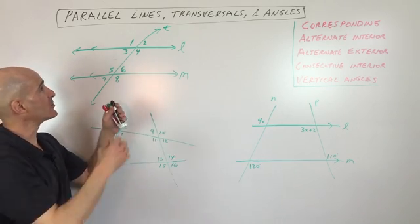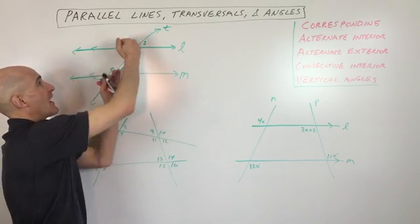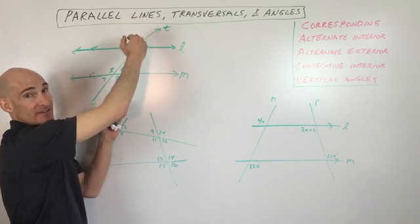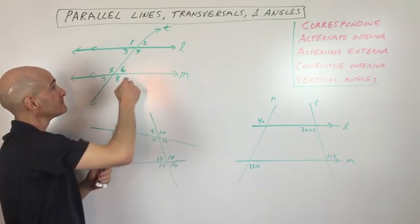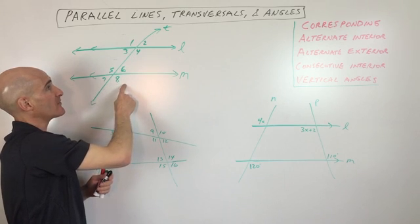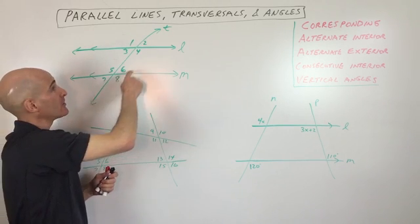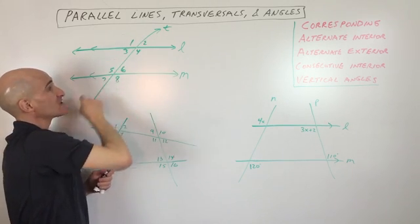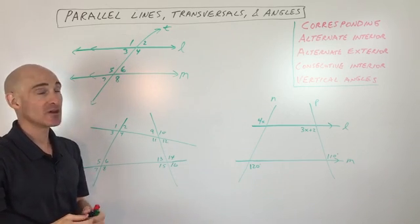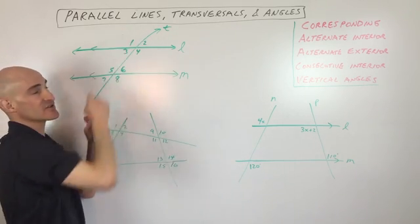Alternate exterior angles: exterior means these are on the outside — they're not in between the parallel lines, they're on the exterior. Alternate means one's on the left and one's on the right. So one and eight are alternate exterior, and two and seven are alternate exterior, and those pairs are going to be congruent to each other.